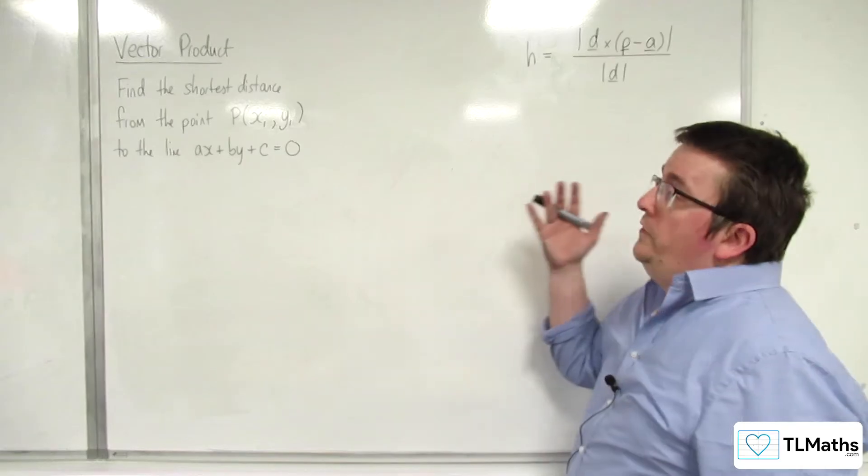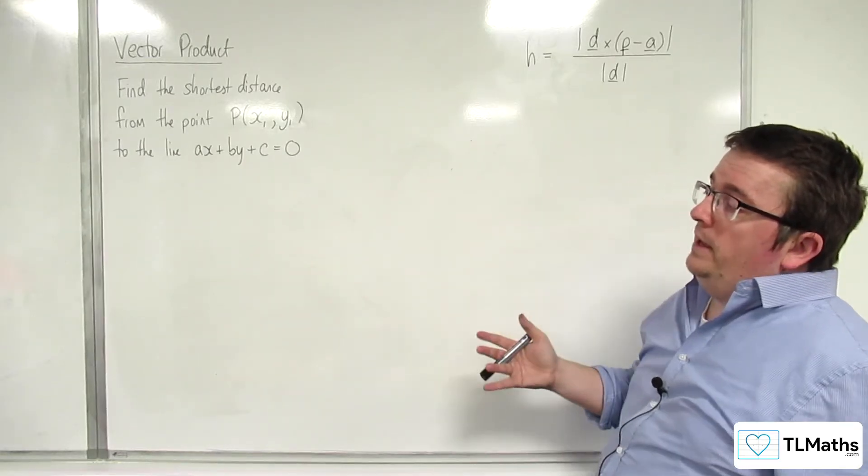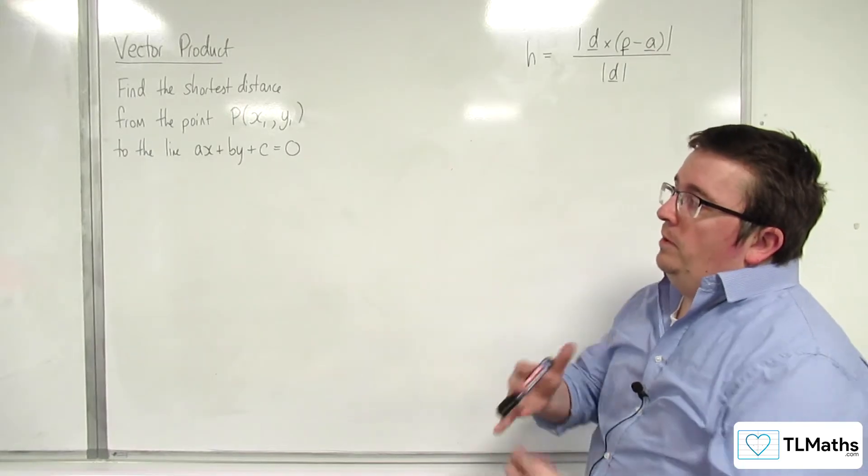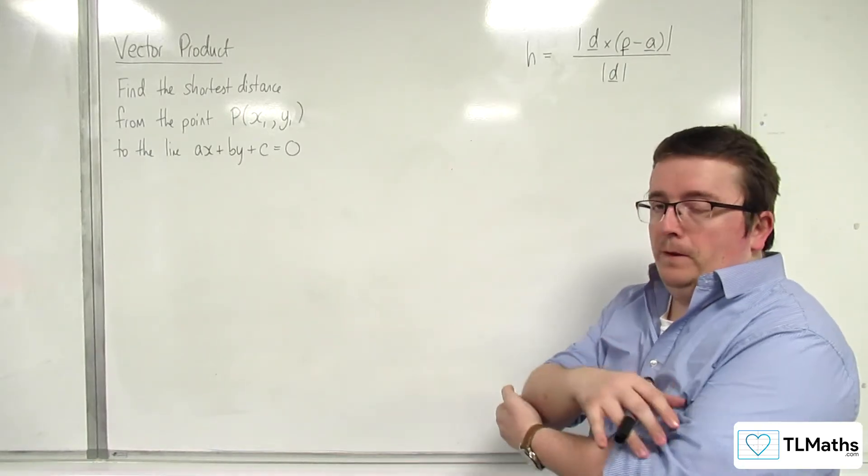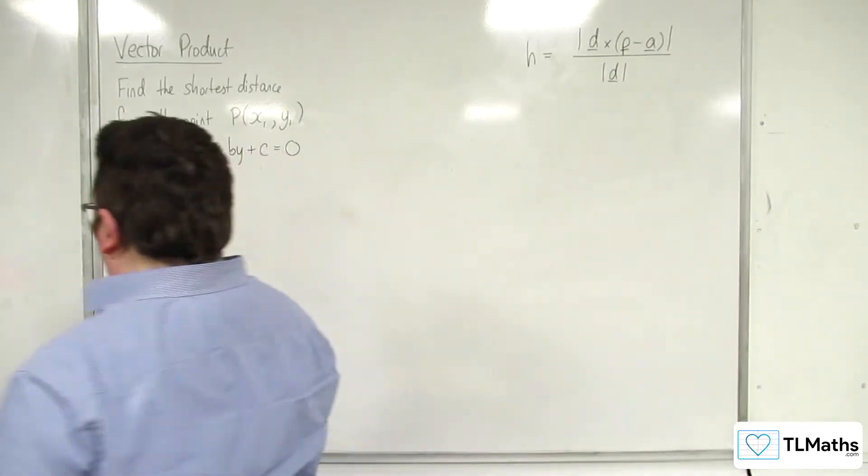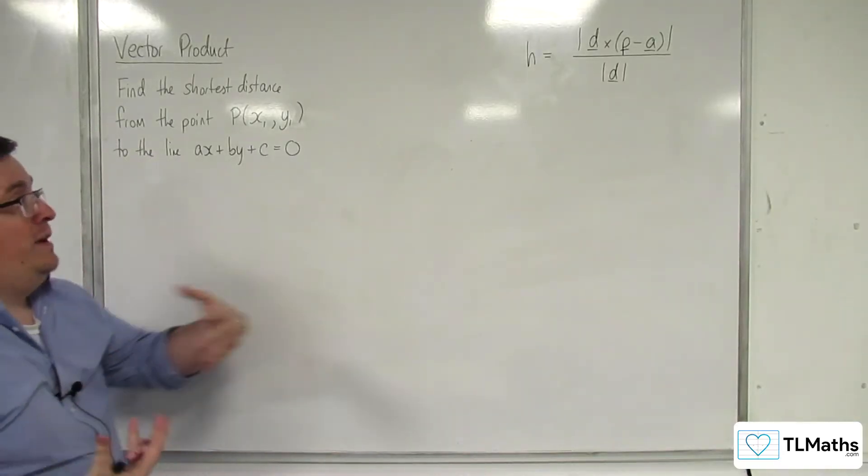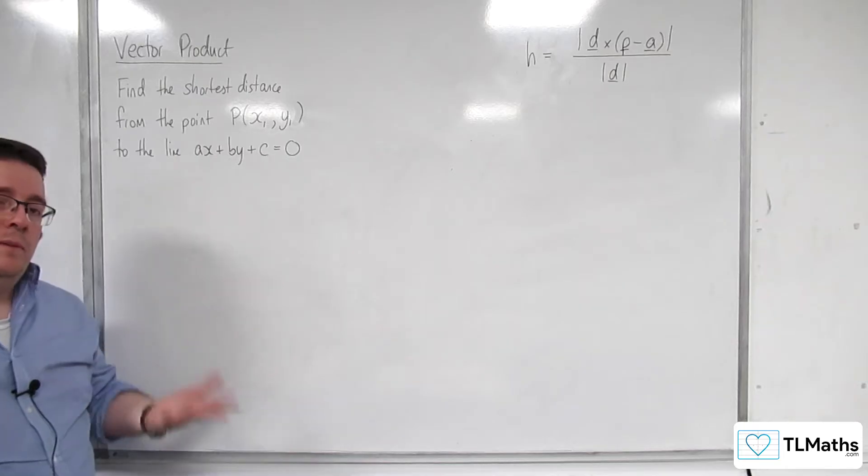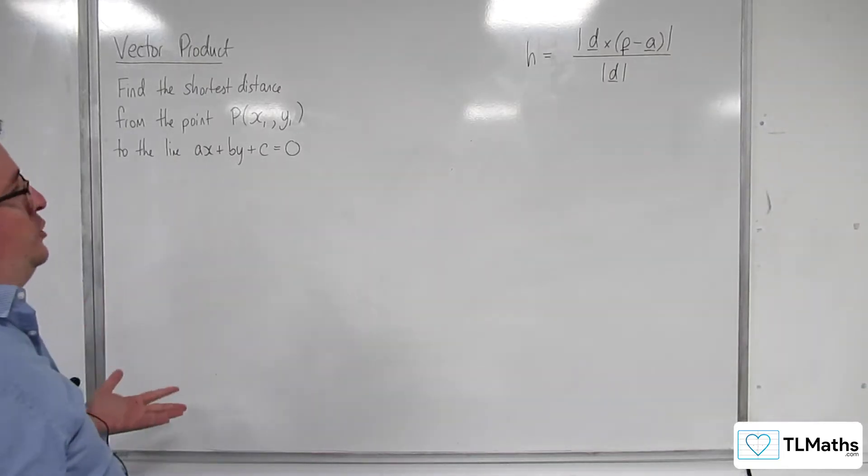So, in this video, we're going to find the shortest distance from the point P with coordinates x1, y1 to the line ax plus by plus c equals 0. So we're in a 2D situation and we've got a 3D formula, and we're going to see if we can adapt this into something nice for two dimensions.